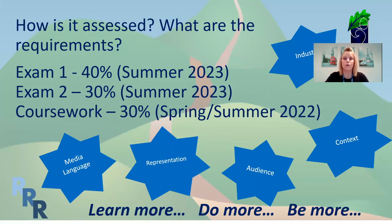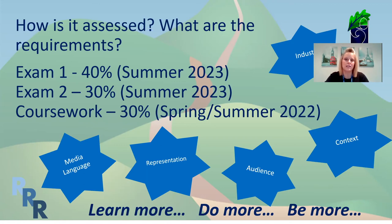How is it assessed? What are the requirements? Component one is exam one, and that's worth 40% of their final GCSE, taken at the end of year 11, summer 2023. They'll be focusing on those set products mentioned earlier, but they'll be asked questions on four different topics. The first is media language — within this, they'll be asked about technical codes such as camera angles, lighting, editing, and sound; written codes, which is how something is spoken; and symbolic codes, which are things like connotations and signifiers.